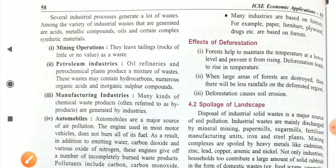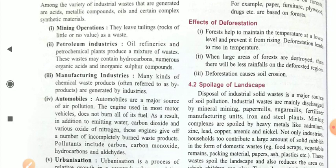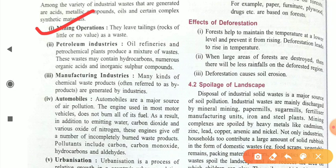Several industrial processes generate a lot of waste. The variety of industrial waste generated are generally acids, metallic compounds, oils, and certain complex synthetic materials. By mining operations, they leave tailing rocks of little or no value as waste. Oil refineries and petrochemical plants produce a mixture of waste. These wastes may contain hydrocarbons, numerous organic acids, and inorganic sulfur compounds.